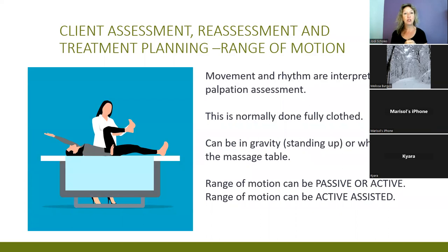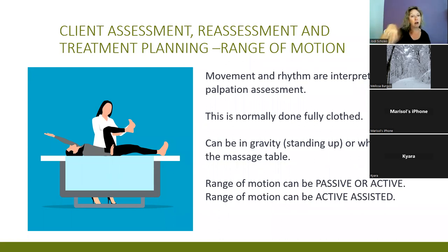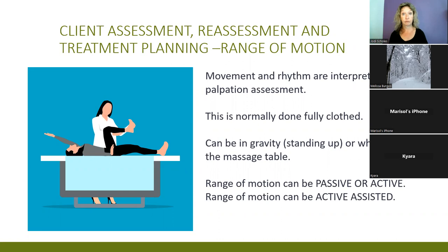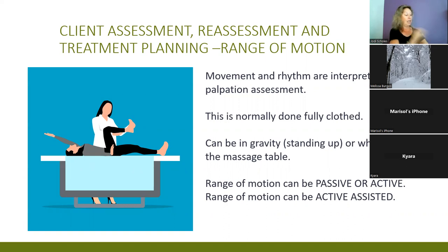There are three types of range of motion: passive, active, and active assisted. Passive means I as the massage therapist am moving you — you're not helping, like the ragdoll arm. Active is when the client is actively moving their own arm. Active assisted is when we assist — for example, keeping a finger on the shoulder and helping the client raise their arm until it hurts, then stopping right there.